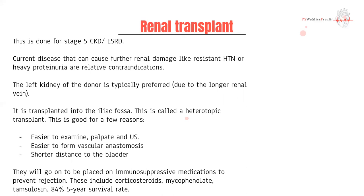In terms of the surgery, we prefer the left kidney of the donor because it has a longer renal vein, making anastomosis easier. It is then transplanted into the iliac fossa. Kidney transplants are called transplants, but you never actually remove the native kidney — you simply add the donor kidney into the iliac fossa. This is called a heterotopic transplant, meaning the organ is inserted into a site where it was not originally present.